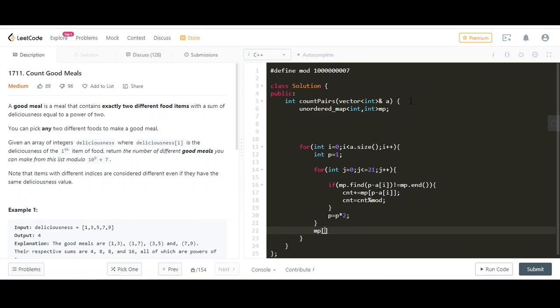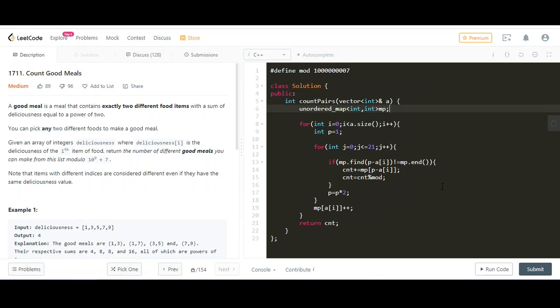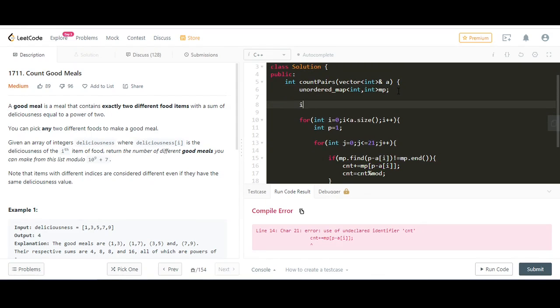We also need to add that particular element inside the map, then we can return the count. Let's run the code. Oh, we haven't declared the count, so we need to declare it first.